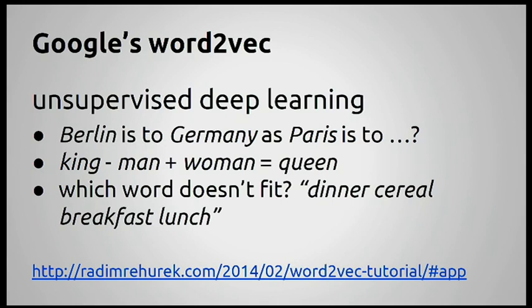In order to do this, it needs a lot of data. The relationships are captured by vectors — each word is a vector of numbers, imagine 300 numbers. You take the vector for king, subtract the vector for man, add the vector for woman, and ask what is the nearest vector. Word2Vec will tell you queen.